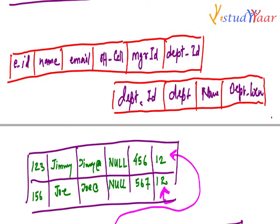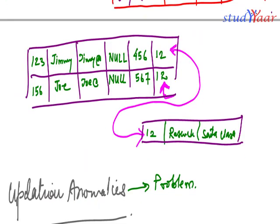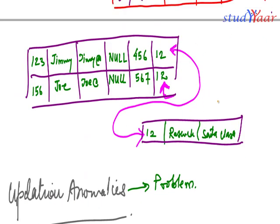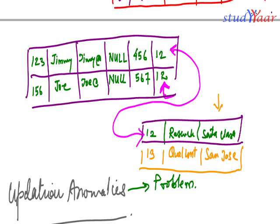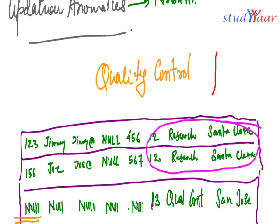However, in the decomposed schema, since the department is a separate table, I could have easily added my new department — Quality Control, San Jose — directly, with department ID as the primary key. No null issue at all.